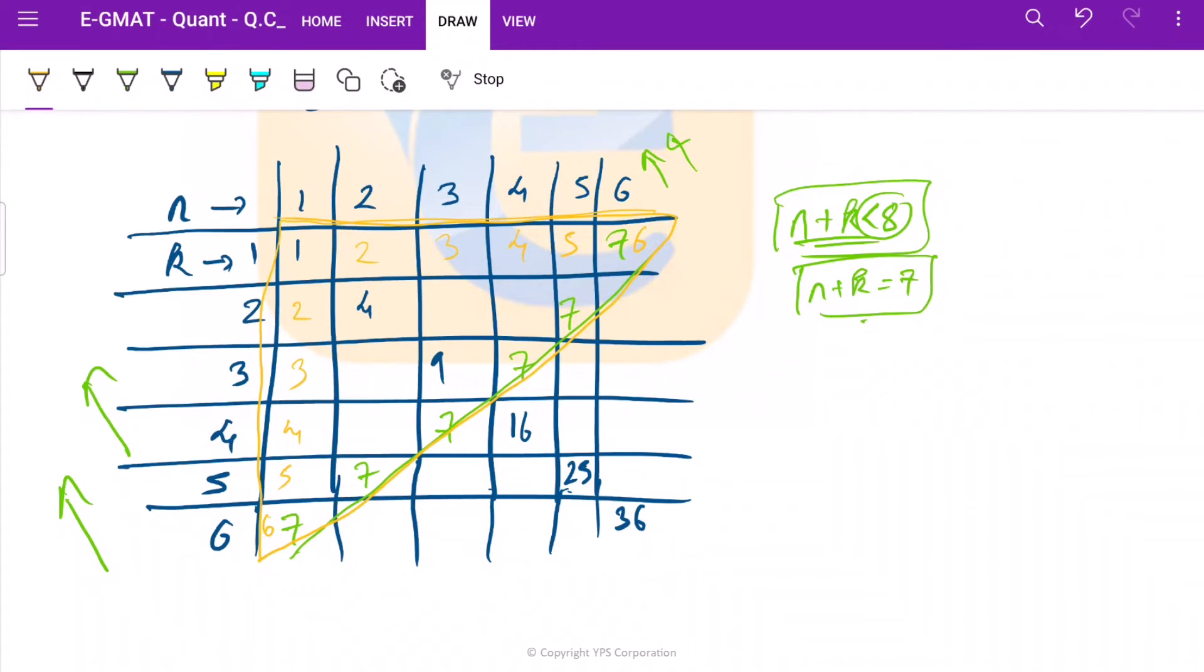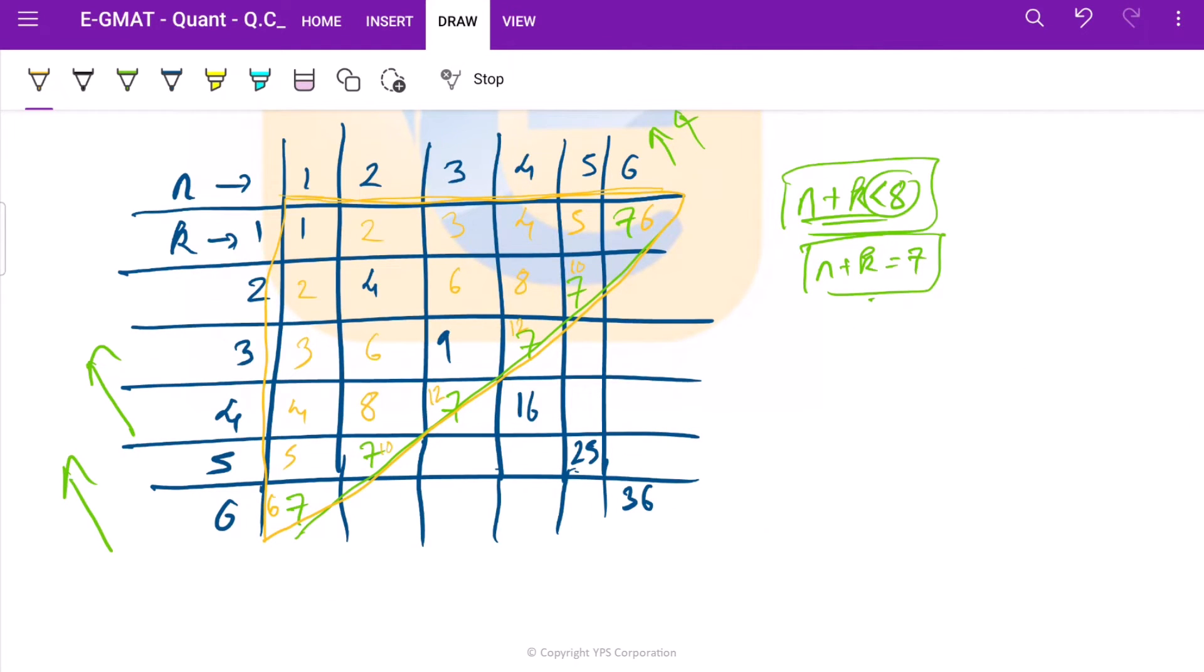Now let us quickly fill in the entire box. So I have filled in the complete box. If you could see, these are the values that we are getting: 1, 2, 3, 4, 5, 6.